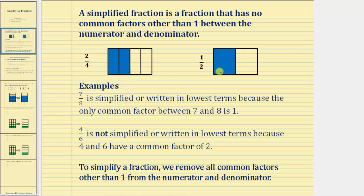We also know that one-half is equivalent to two-fourths. We know they're equivalent because the same amount is shaded, but for two-fourths we're using smaller parts or pieces of the whole to represent the same amount. Two-fourths is not simplified because two and four share a common factor other than one — they share a common factor of two.